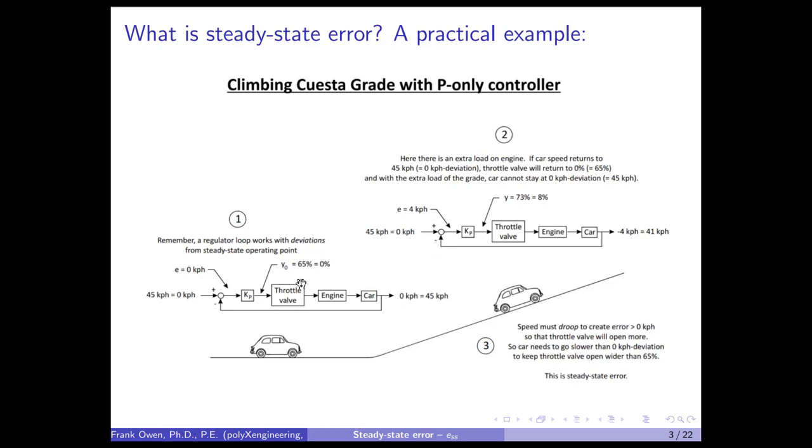Unfortunately, what happens is, since I have only a proportional controller—this is a P-only controller—you can have other types of controllers. You can have a PI controller, a PD controller, or a PID controller. But since I only have a constant here, that means this 65% opening is tied to the 45 kilometers per hour.